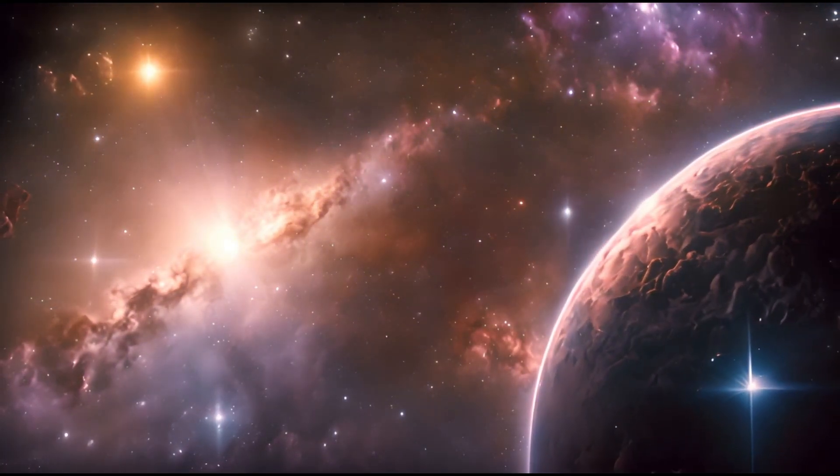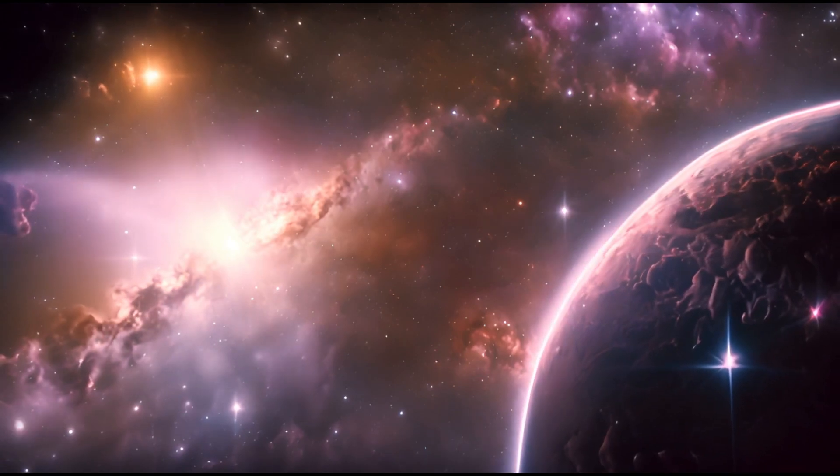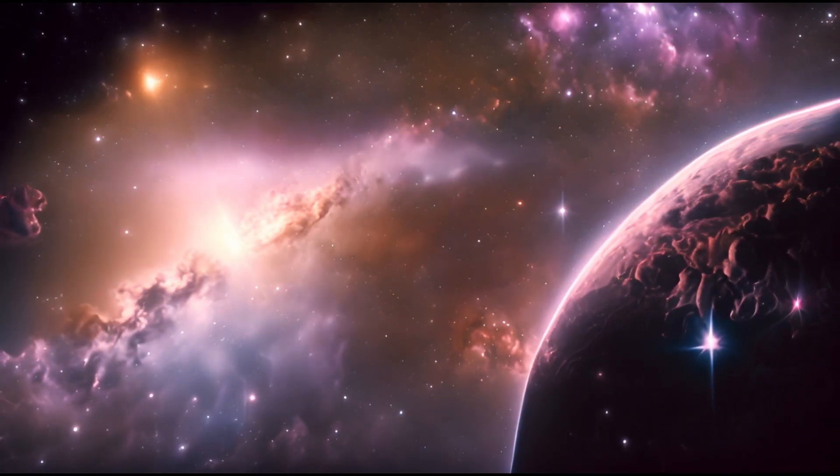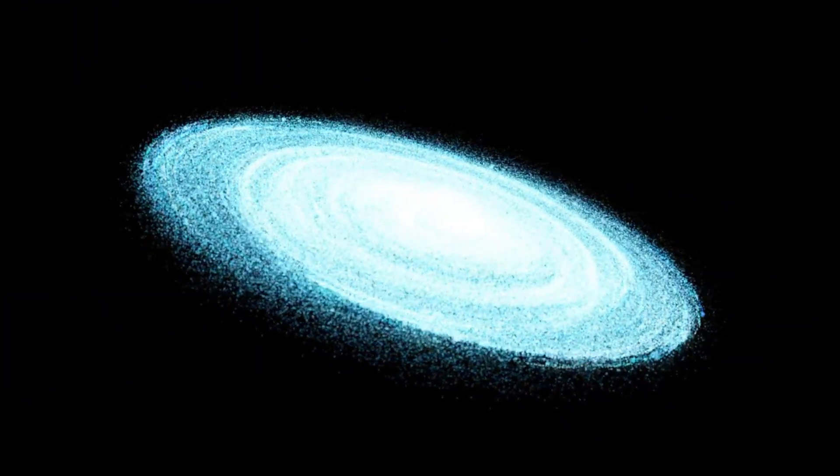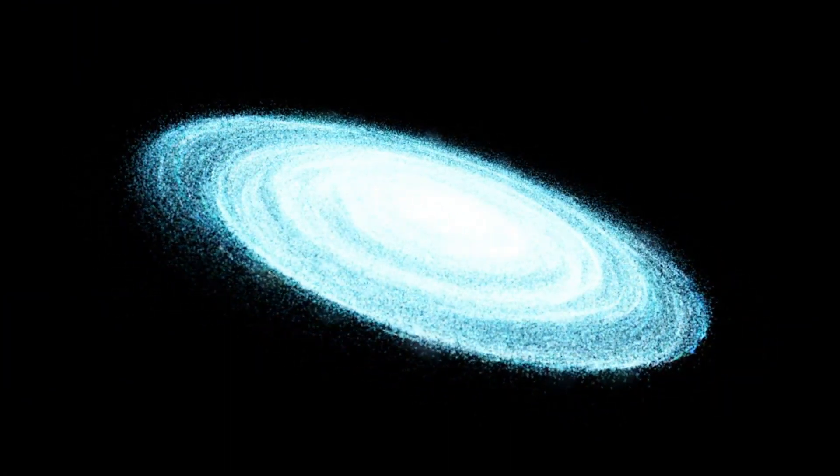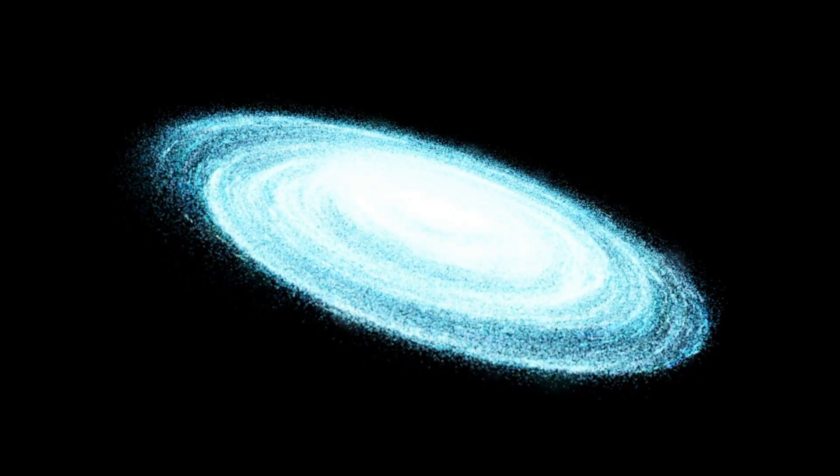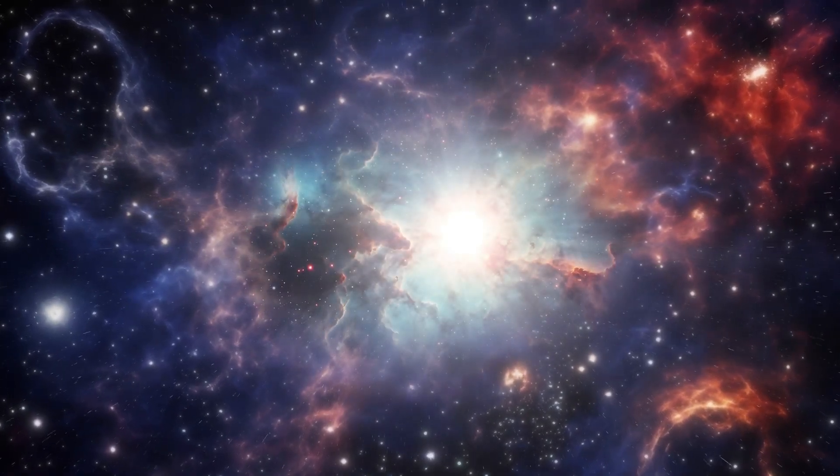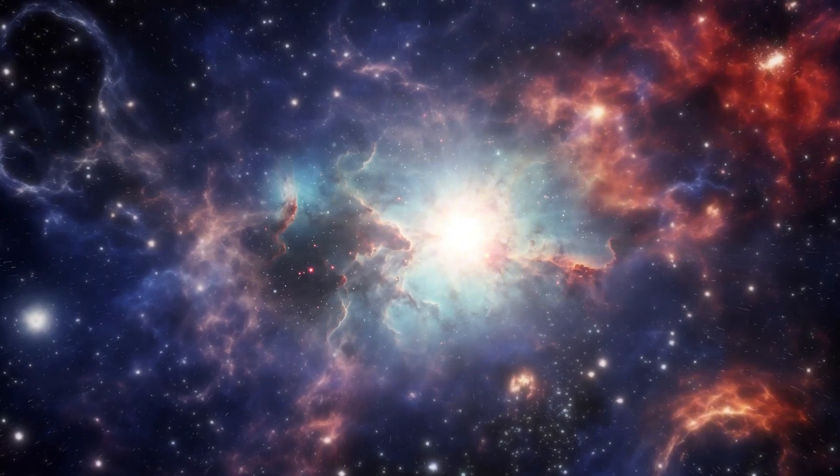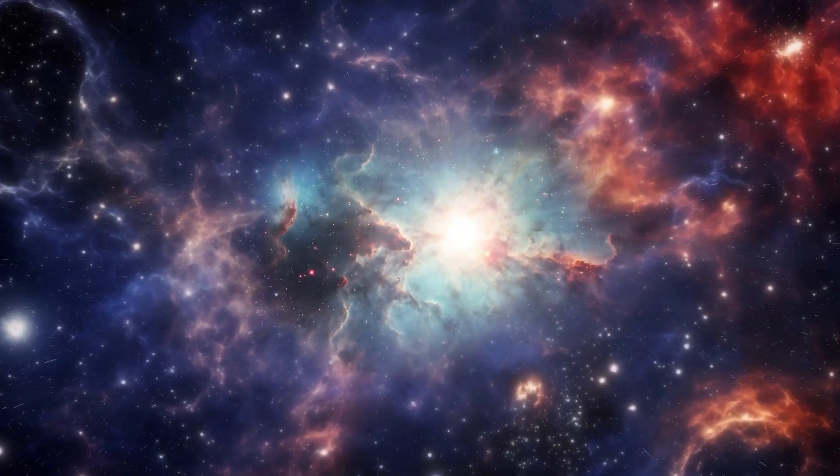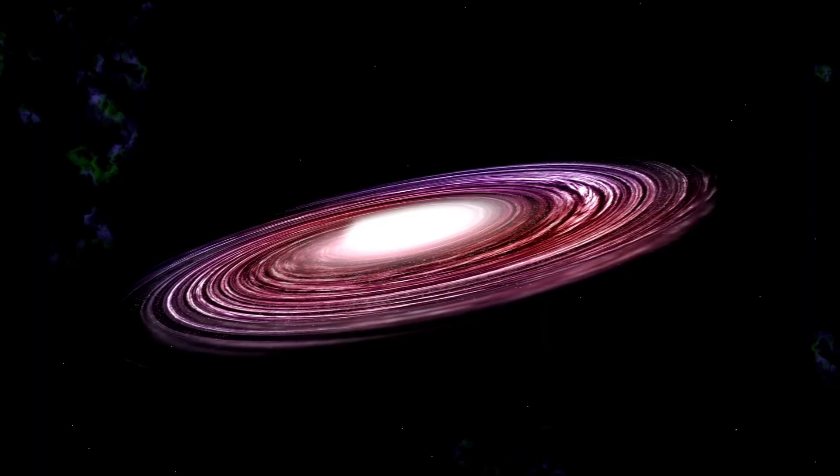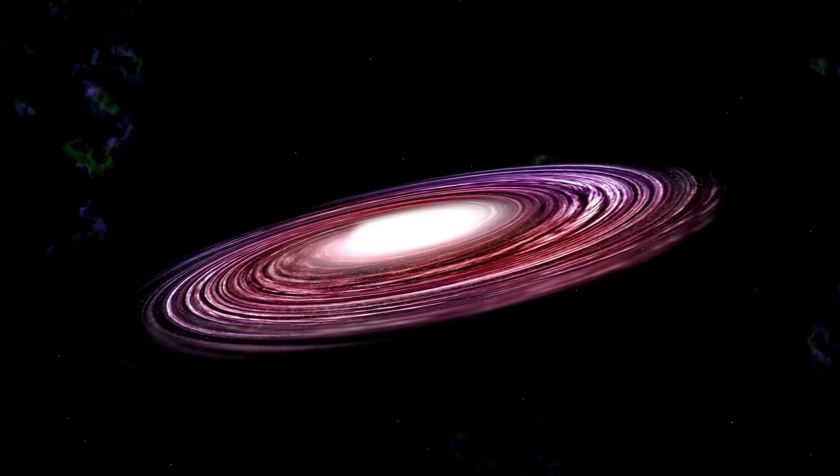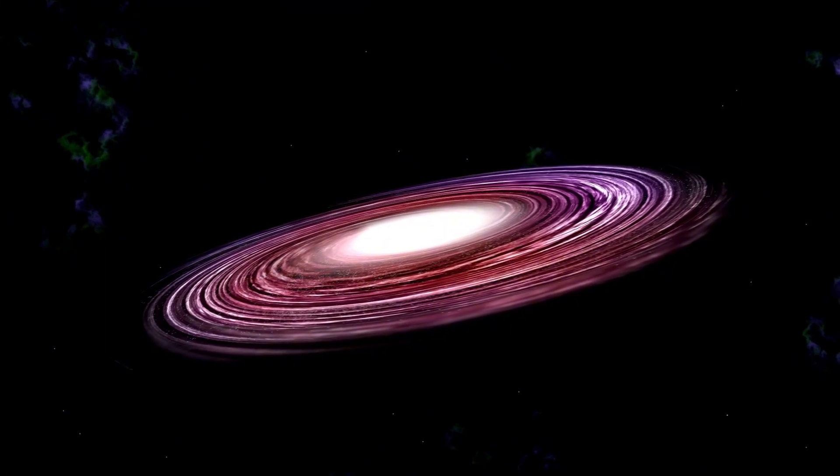It's not a solitary star but part of a complex triple star system, with Polaris A and Polaris B forming a binary pair, while Polaris B orbits around them. The interactions among these stars create gravitational forces, shaping their orbits and influencing their behavior. However, the exact mechanisms behind these interactions remain unclear.